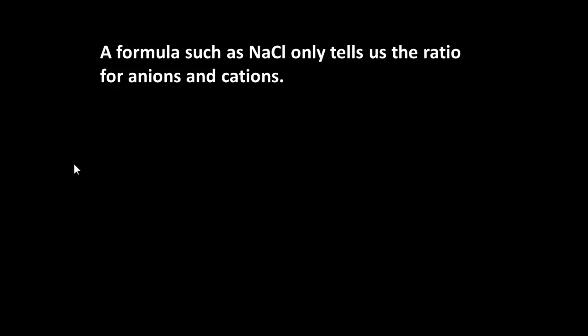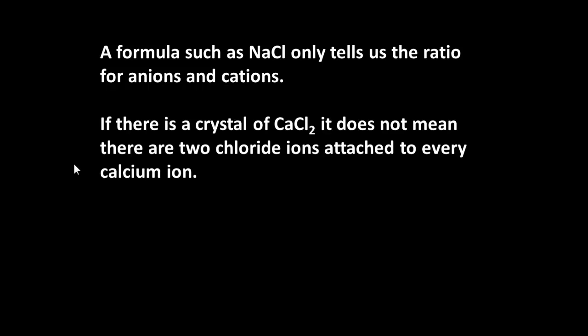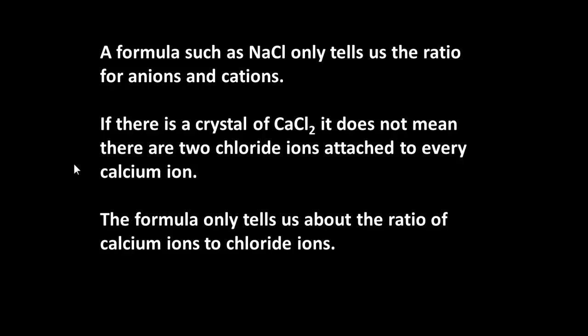So a formula tells us the ratio of anions and cations, and that's all. In a crystal of calcium chloride, it doesn't mean to say that there are going to be two chloride ions attached to every calcium ion. It only tells us about a relationship or as a ratio within a lattice.